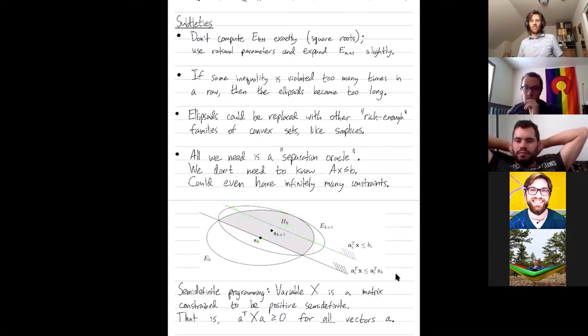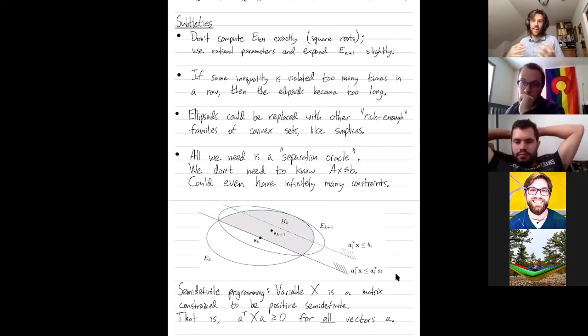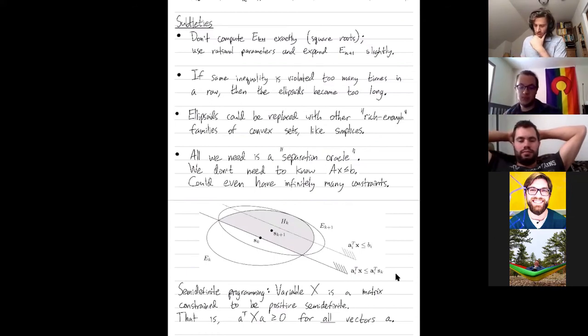That's all we needed in our algorithm was an oracle that said, aha, is this point in the feasible region or not? If not, give me any separator. That allows you to run this algorithm when you actually have a programming problem that has, for example, infinitely many constraints. You could have infinitely many constraints and still have an oracle that when you're not in the feasible region returns some separator.